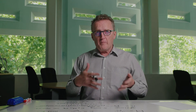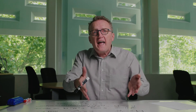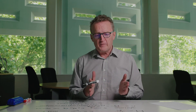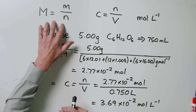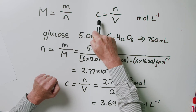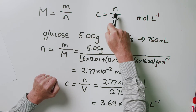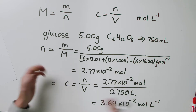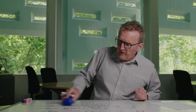That's a fairly typical stoichiometric calculation when finding the concentration of a solution you're making up in the laboratory. Generally, you weigh out a particular mass of material, which means you'll need to use both equations: the first to calculate N, and then the second to calculate C.